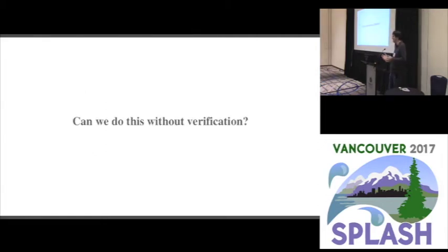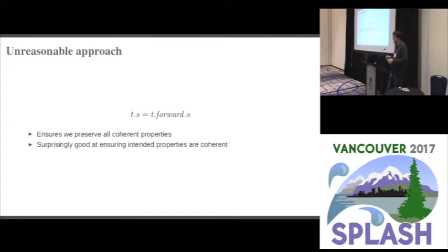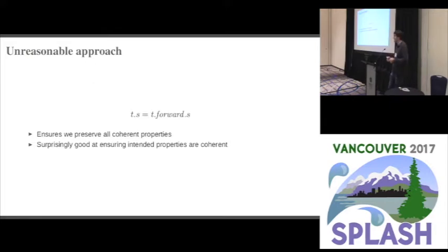Verification is still something we're a long way from doing routinely in practice, so can we do it without? An approximation is to require that the values of attributes between the original and forwarding tree are always strictly equal. This is enough to ensure we preserve all coherent properties — there's a proof in the paper. It is also surprisingly good at ensuring that, as an extension developer, the properties you intend are coherent properties. It is always possible, no matter how well-behaved an extension, to write an incoherent property about it. However, if you obey this convention where attributes are always strictly equal, any property you can write a test case for is a coherent property.